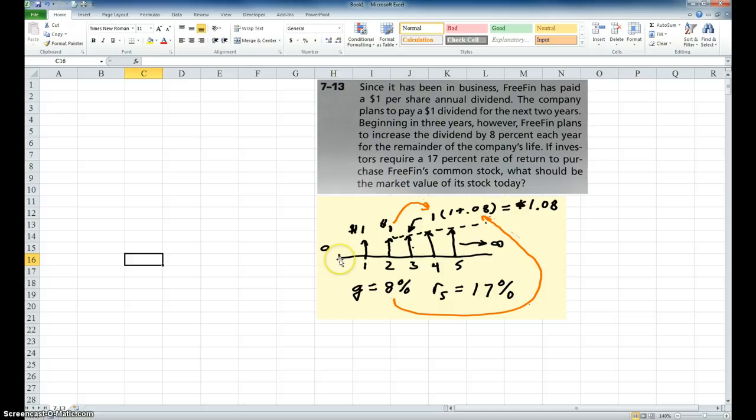Okay, so we're not going to count the one at time zero, because that's just been paid. Because if I buy the stock right now, that dividend's already paid. It says it has paid. So starting year one is a dollar, and then year two is a dollar, and then year three it increases by 8%. So I'm going to take that dollar that I earned in year two, and I'm going to take $1 times (1 plus .08), because it's 8%.